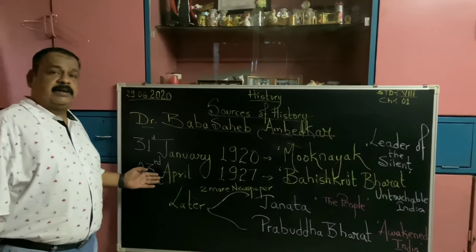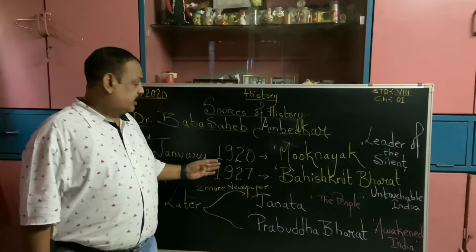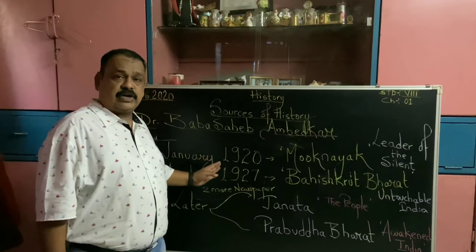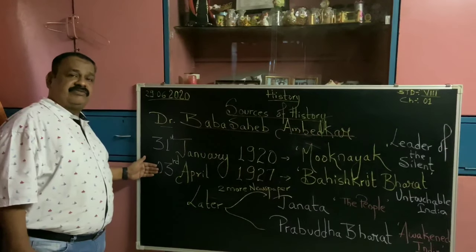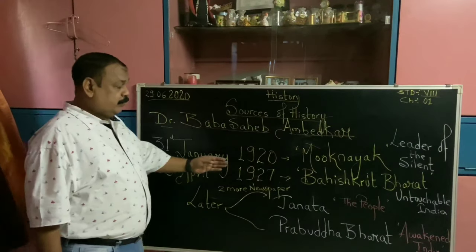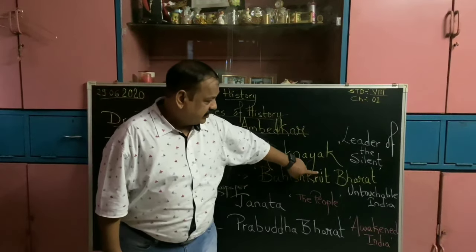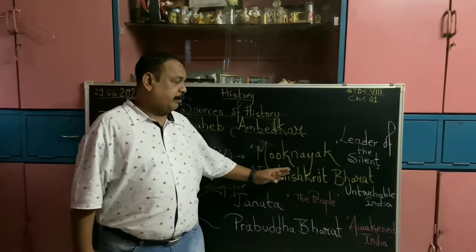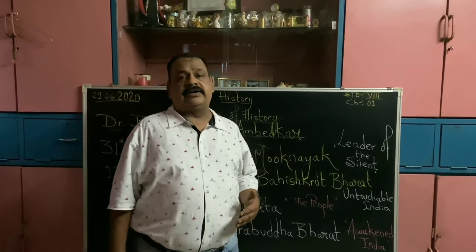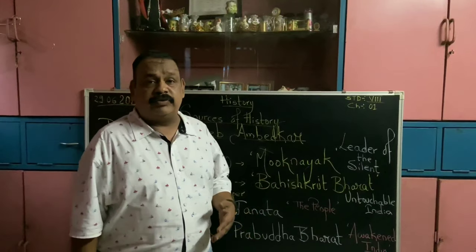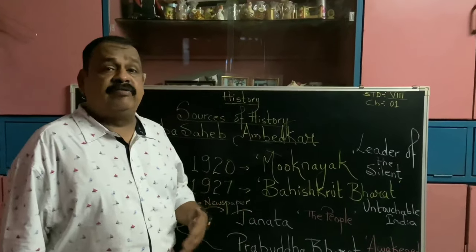The second newspaper that he published was on the 3rd of April 1927. I am repeating, my dear students, that you will find the mention of the year 1927 — I request you to jot it down somewhere. The newspaper he started was called Bahishkrit Bharat — also called 'Untouchable India.' So you can see the role that Bhimrao Ramji Ambedkar played was very crucial and very important in terms of bringing about an awakening and revolution in society.